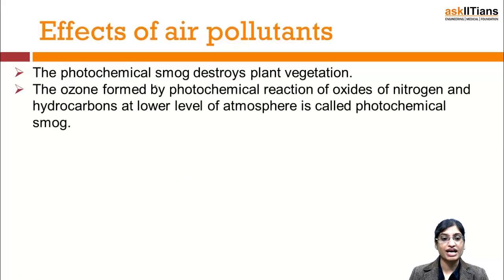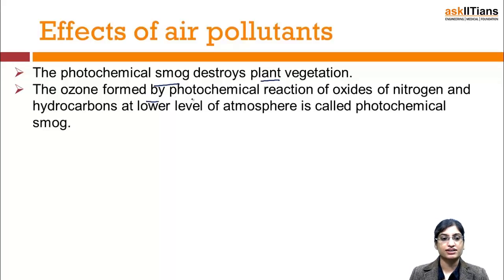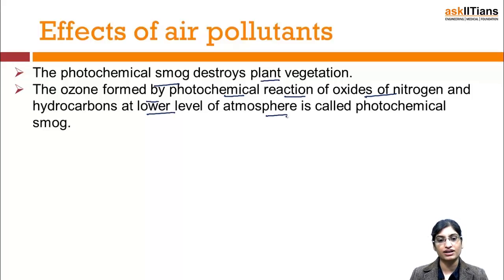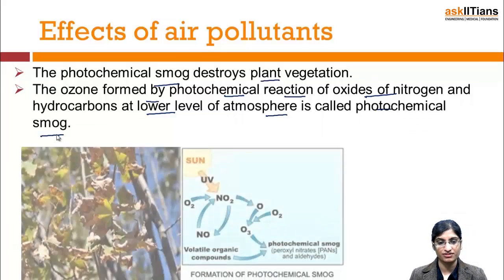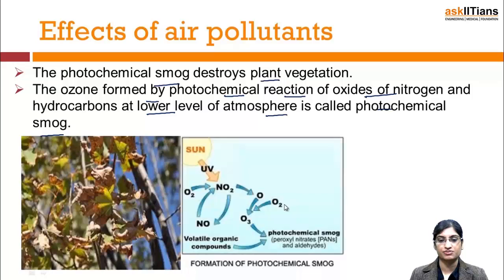Photochemical smog destroys plant vegetation. The ozone formed by the photochemical reaction of oxides of nitrogen and hydrocarbons at the lower level of the atmosphere is known as photochemical smog. In its formation, nitrogen oxide reacts with oxygen in the presence of sunlight to form PAN — peroxy acetyl nitrate.